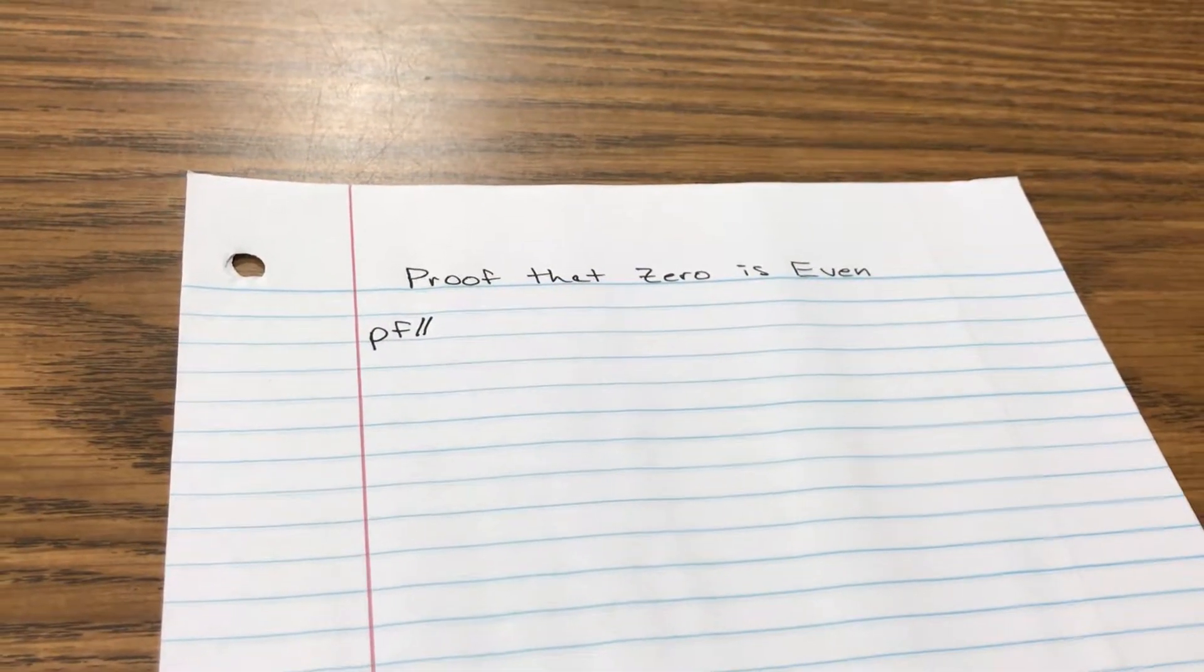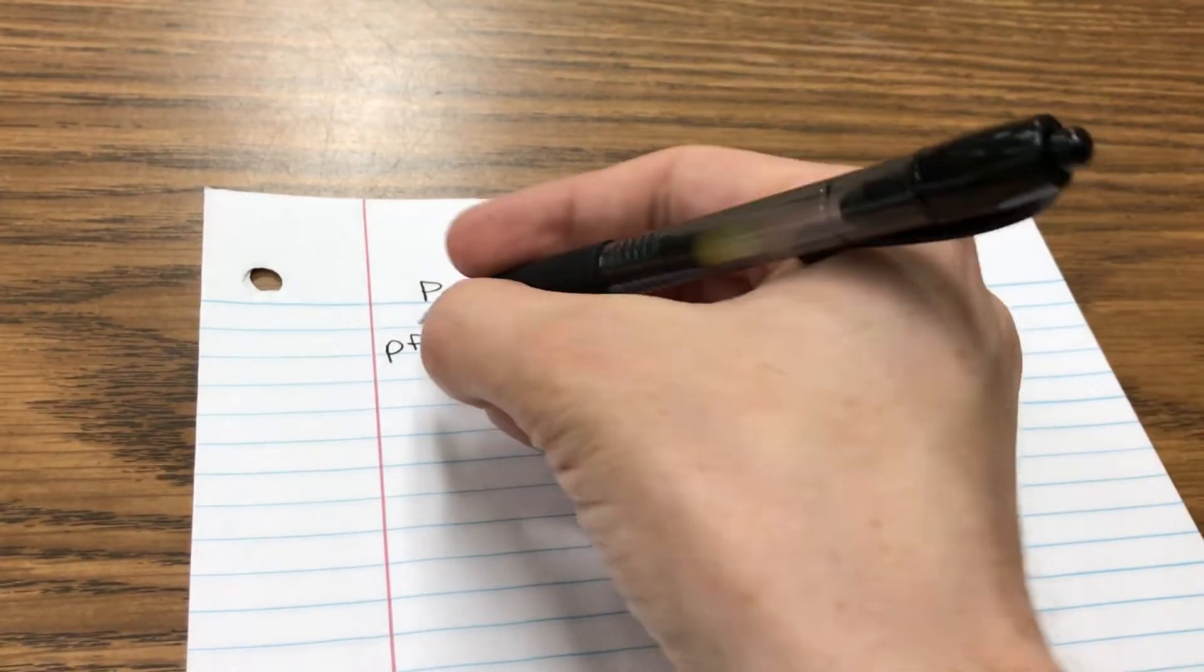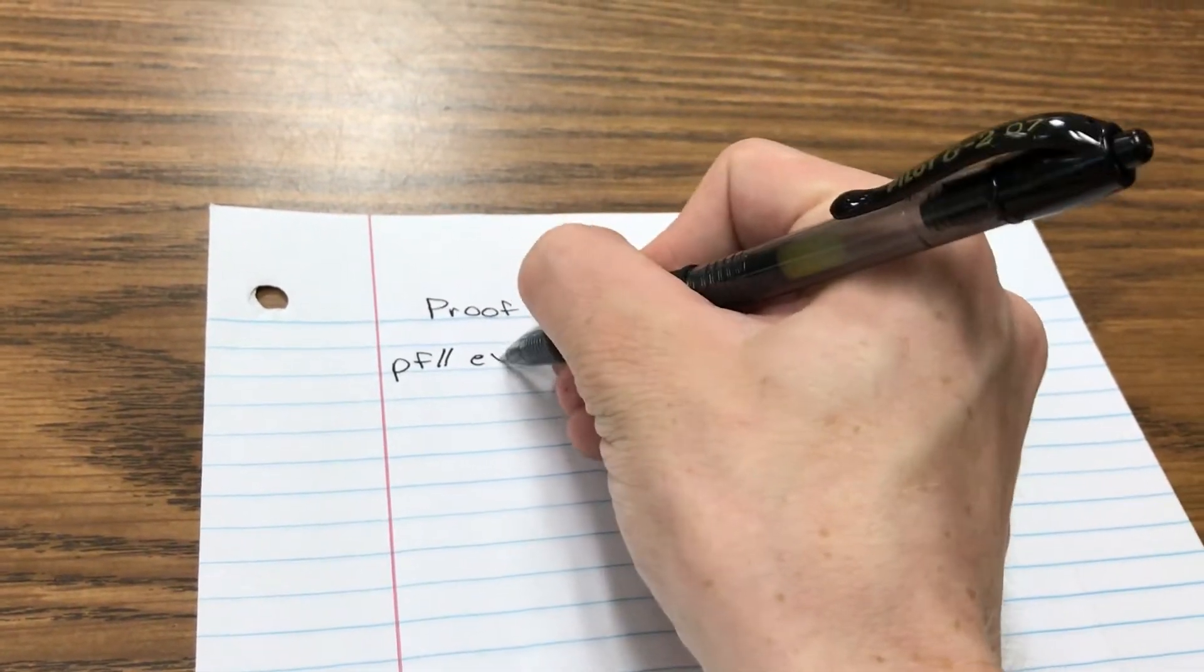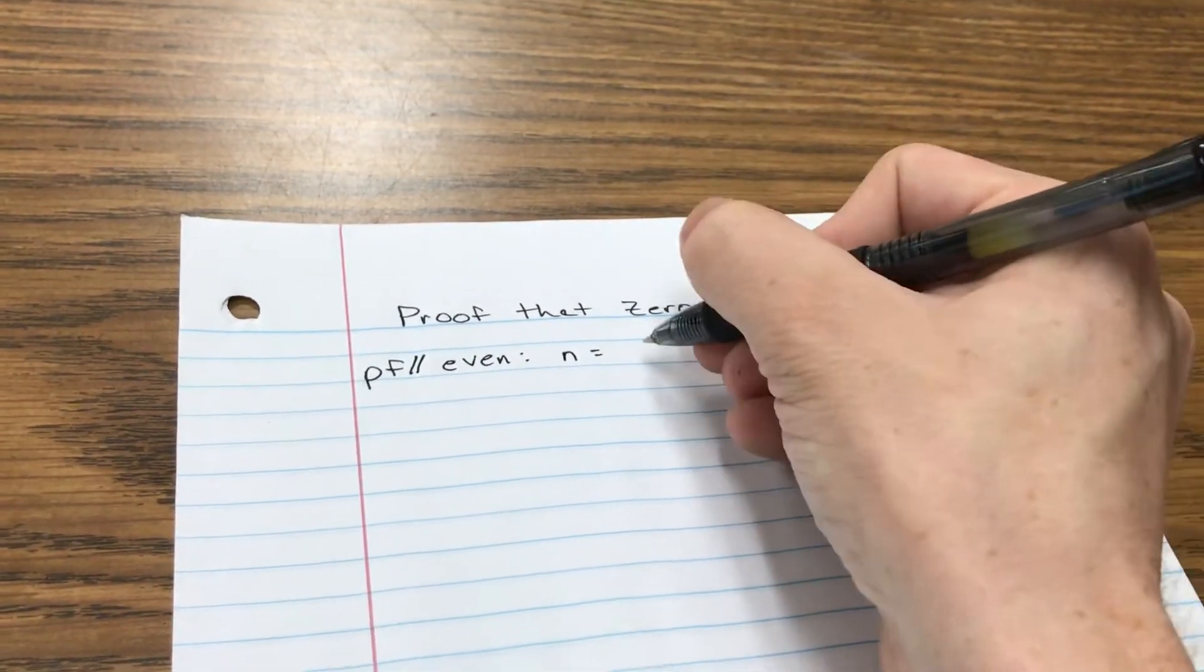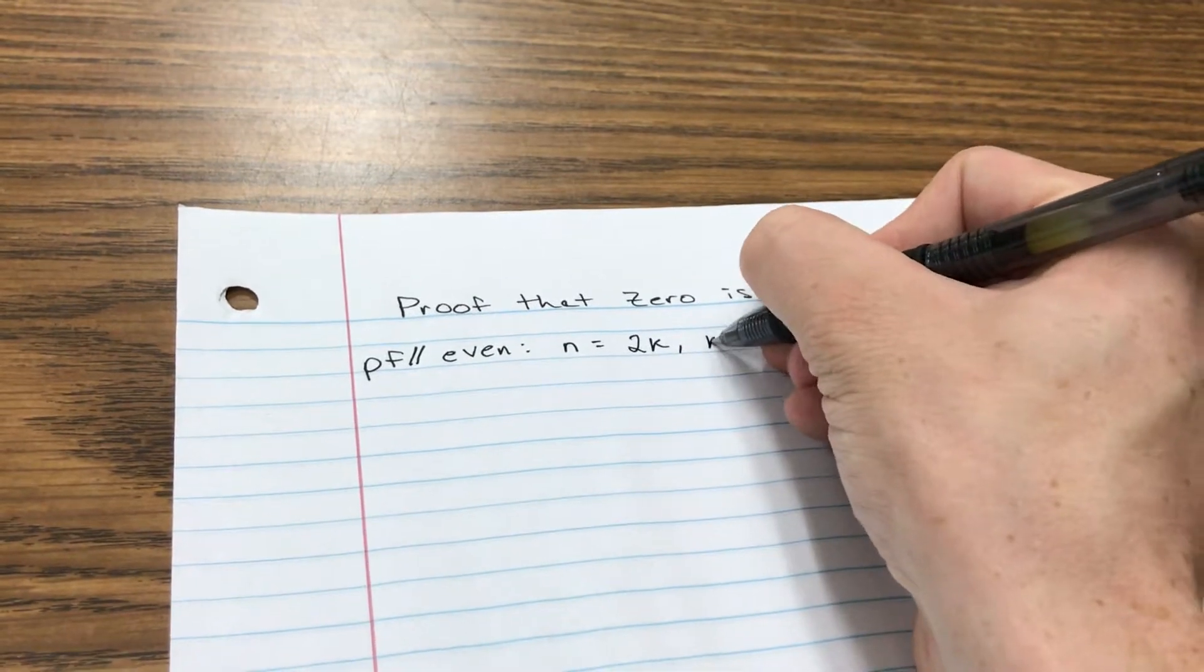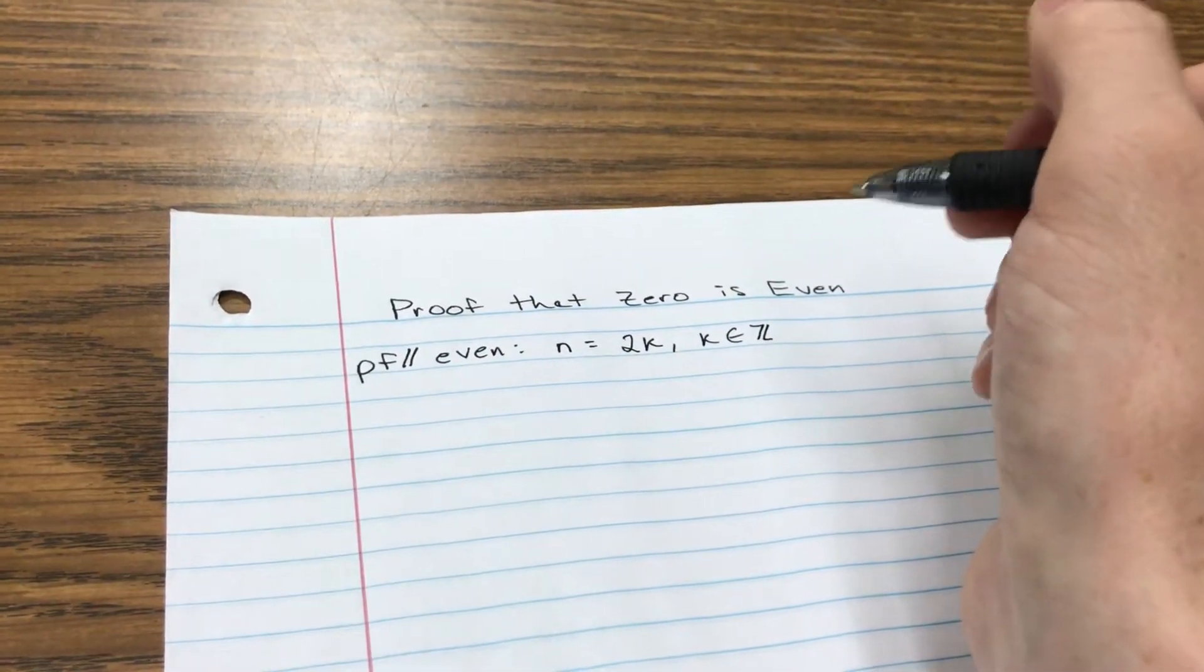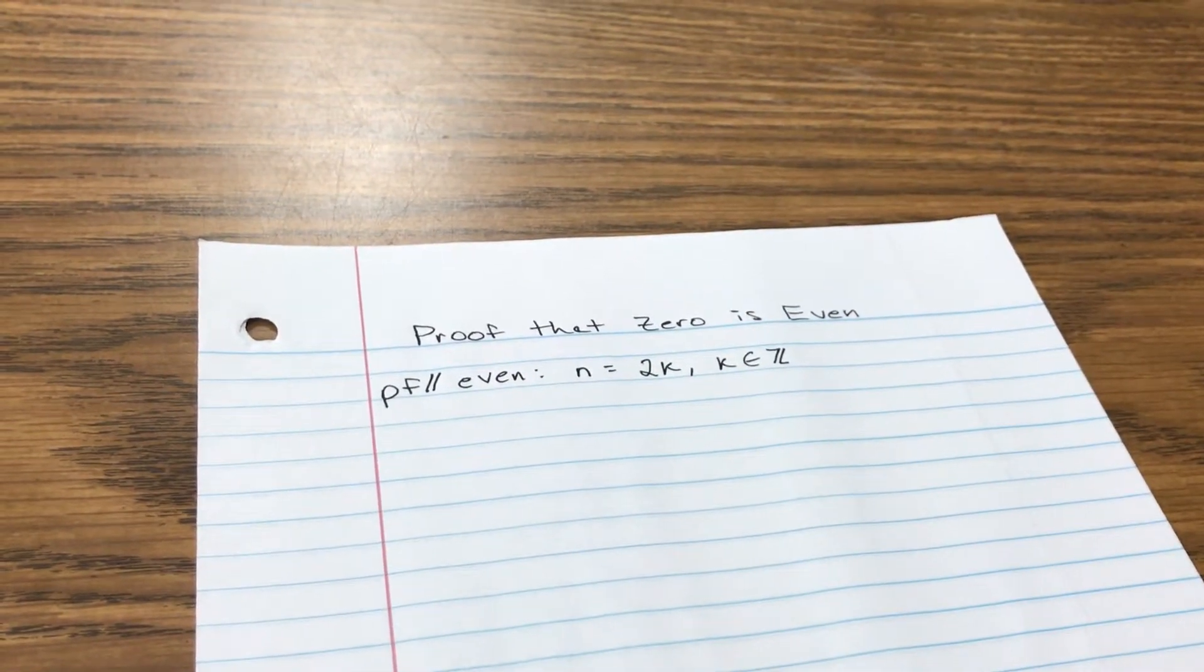Well, let's go ahead and define an even number and an odd number. So an even number is just going to be a number, let's just call it n, that can be expressed as 2 times k, where k can be any whole number integer. All right, let me go ahead and define an odd number.